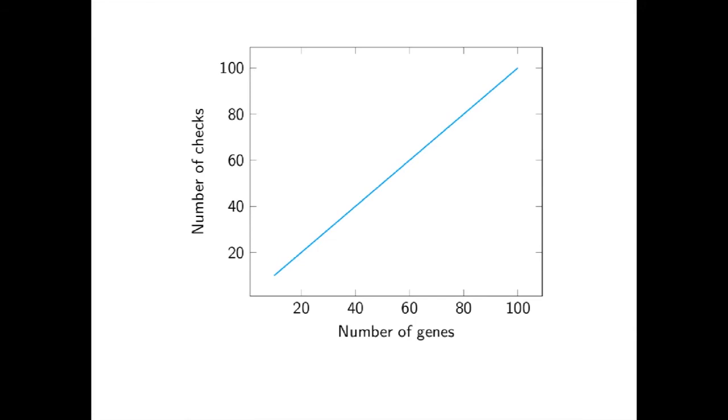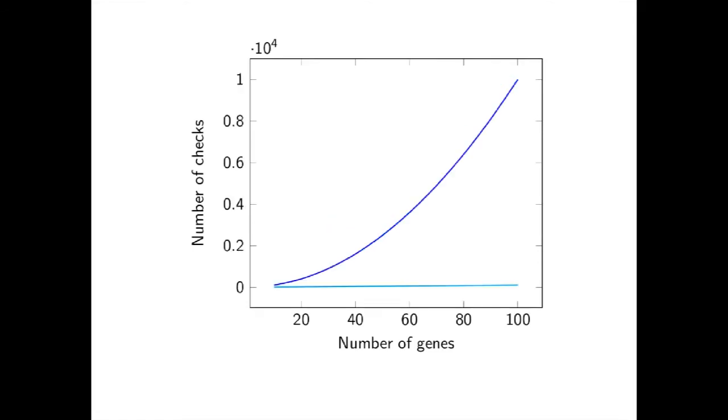This graph shows the number of checks required for a set number of genes in a database. As we can see, if you are only checking for one gene causing a disease, the number of checks will equal the number of genes in the database. However, as soon as you are checking for two genes interacting to cause a disease, the number of checks increases quadratically with regards to the number of genes in the database. And once you are testing for more than two genes interacting, the number of checks required becomes so high that it is infeasible to use these types of methods for larger data sets.